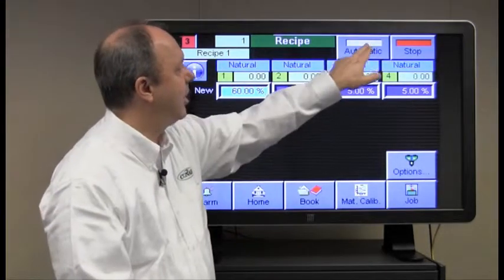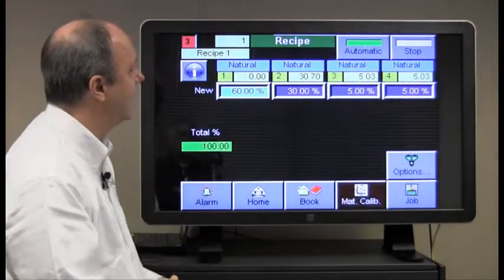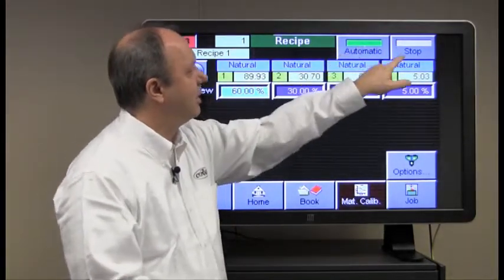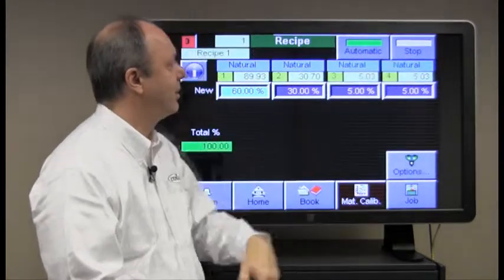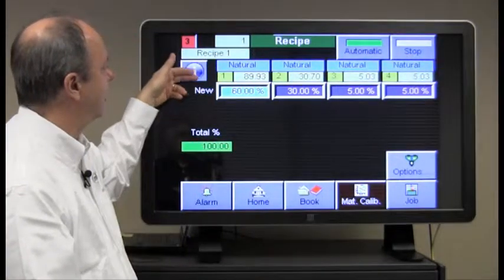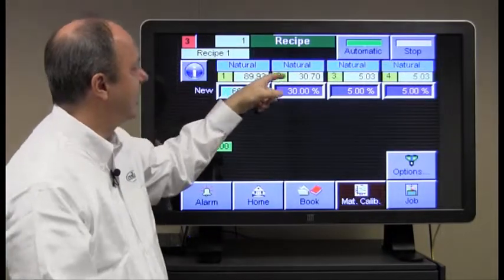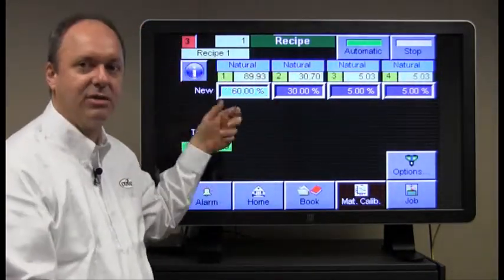So let's place the system into automatic. You can see the green light comes on over automatic here and the red light over stop is gone. The system has started making batches and you can see that it's indicating the values that it's done for the batch.